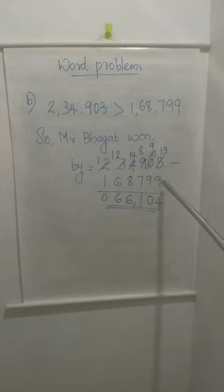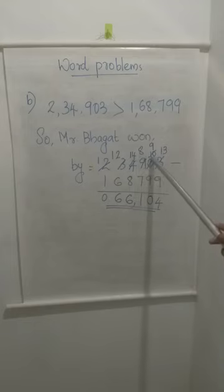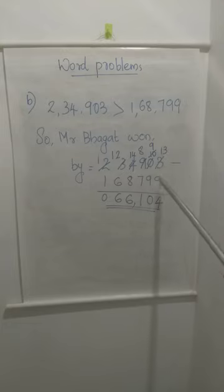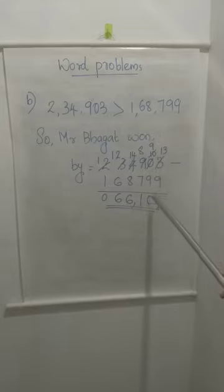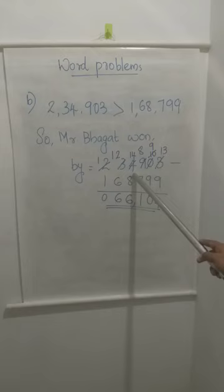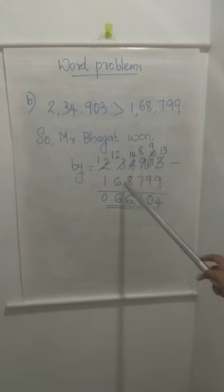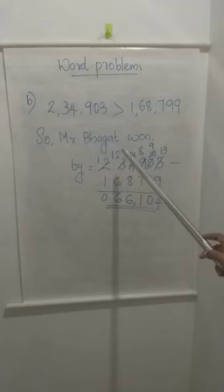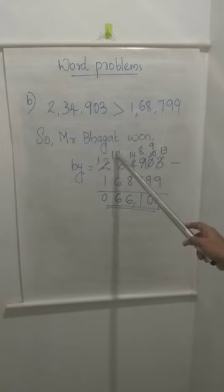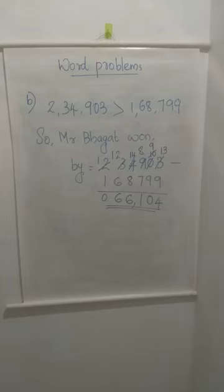Subtracting: 3 minus 9 — we cannot subtract, so borrowing. The next digit is 0, so we cannot borrow from 0; we borrow from the digit after that. So 9 becomes 8 and 0 becomes 10. From this 10 we borrow, so 10 becomes 9 and 3 becomes 13. Now 13 minus 9 is 4. Here we have 9 minus 9 is 0. The 9 we borrowed from became 8, so 8 minus 7 is 1. Now 4 minus 8 — cannot subtract, so borrow: 3 becomes 2 and 4 becomes 14. 14 minus 8 is 6. Now 2 minus 6 — cannot subtract, so borrow: 2 becomes 1 and 2 becomes 12. 12 minus 6 is 6. 1 minus 1 is 0. So Mr. Bhagat won by 66,104 votes.